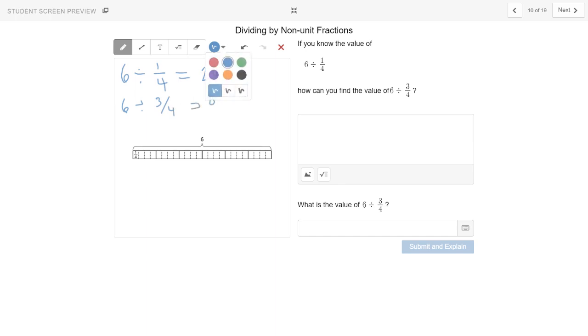And we can go through and double check ourselves. So three-fourths, one, two. So there's three-fourths. That's one group. One, two, three. That's two groups. One, two, three. That's four groups.